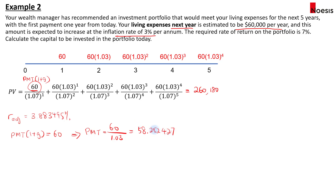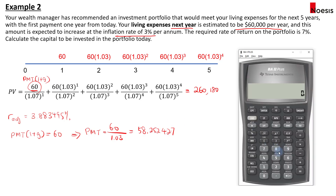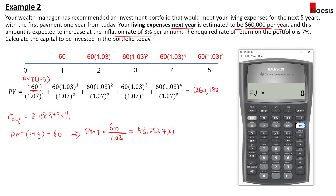Inputting PMT as 58.252427 into the calculator, with N=5, the same adjusted discount rate, and FV=0, and computing PV gives $260,180 — the same amount as expected.